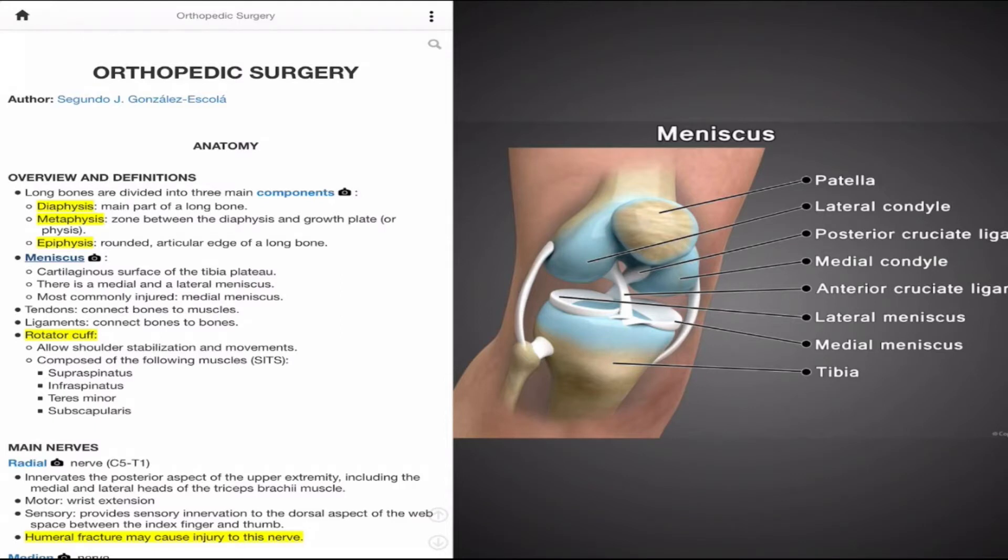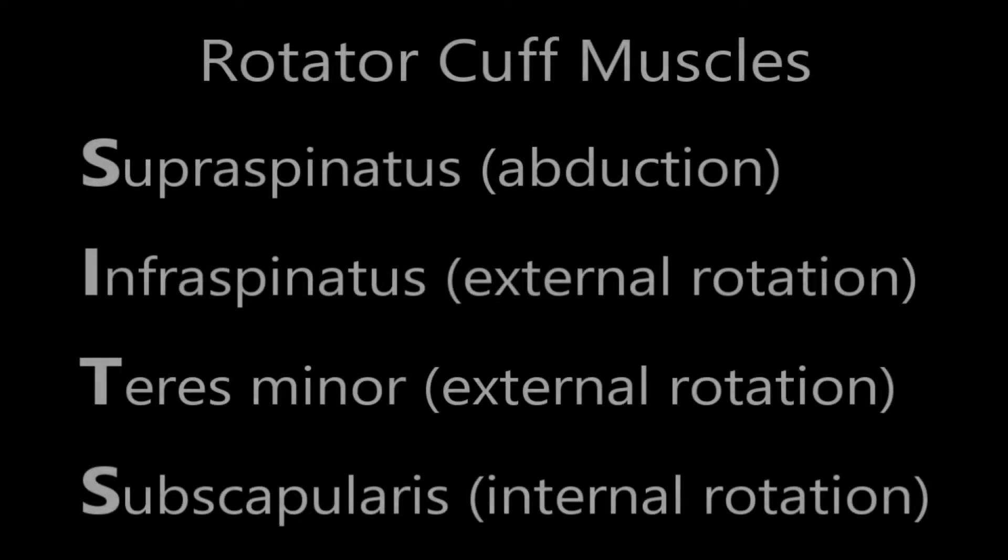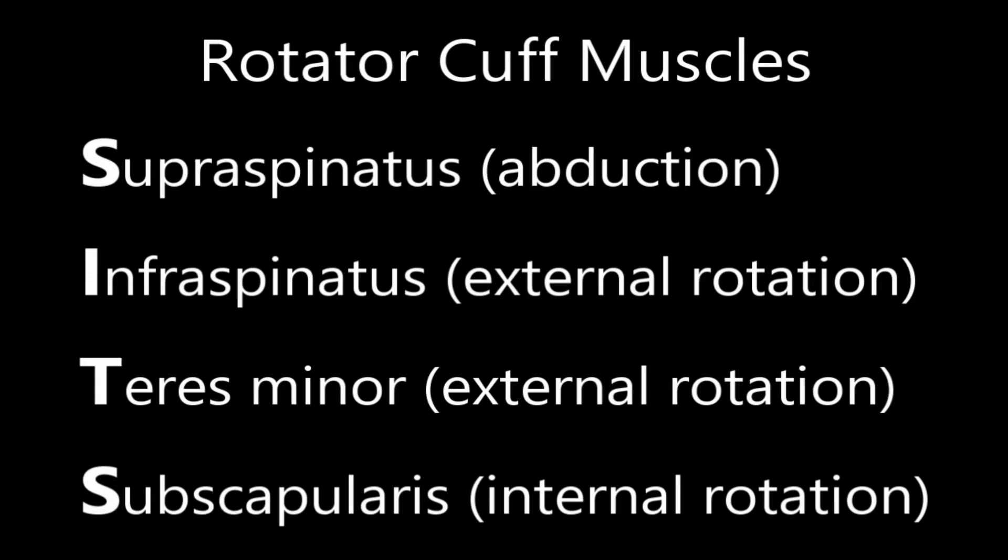The last tissues that we'll discuss are the rotator cuff muscles, which provide the shoulder with stability and motion. The rotator cuff is comprised of four muscles, often remembered using the mnemonic SITS: the supraspinatus, the infraspinatus, the teres minor, and the subscapularis. The supraspinatus is responsible for the elevation, or abduction, of the shoulder. The infraspinatus, and to a lesser extent, the teres minor, both play a role in external rotation of the shoulder. And lastly, the subscapularis is important for internal rotation of the shoulder.